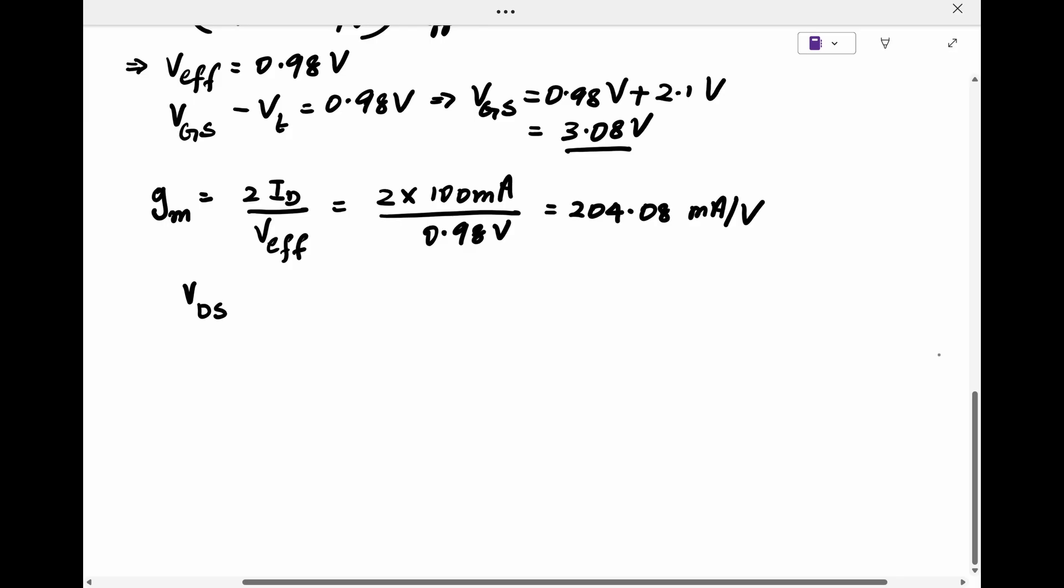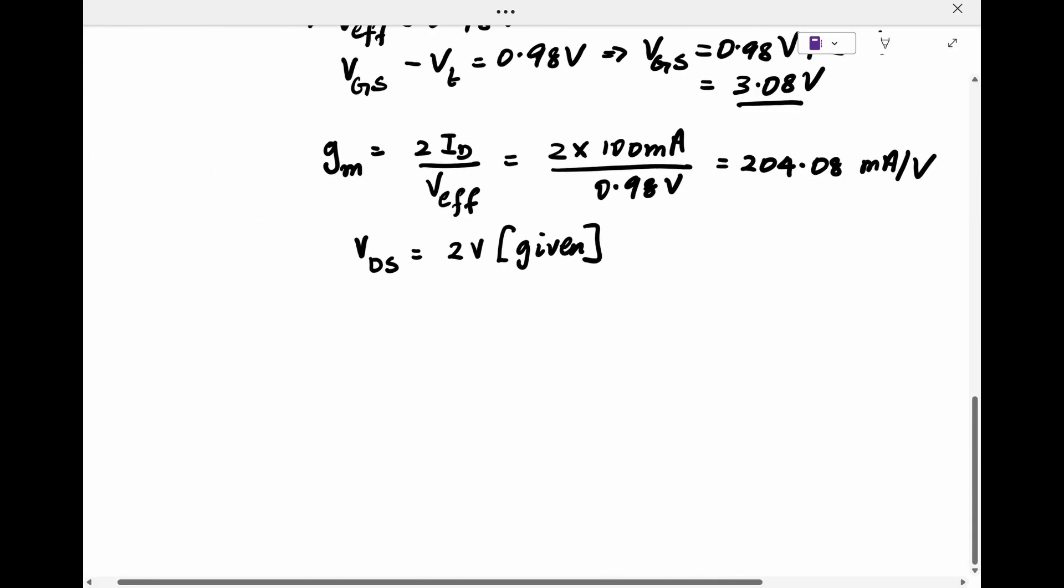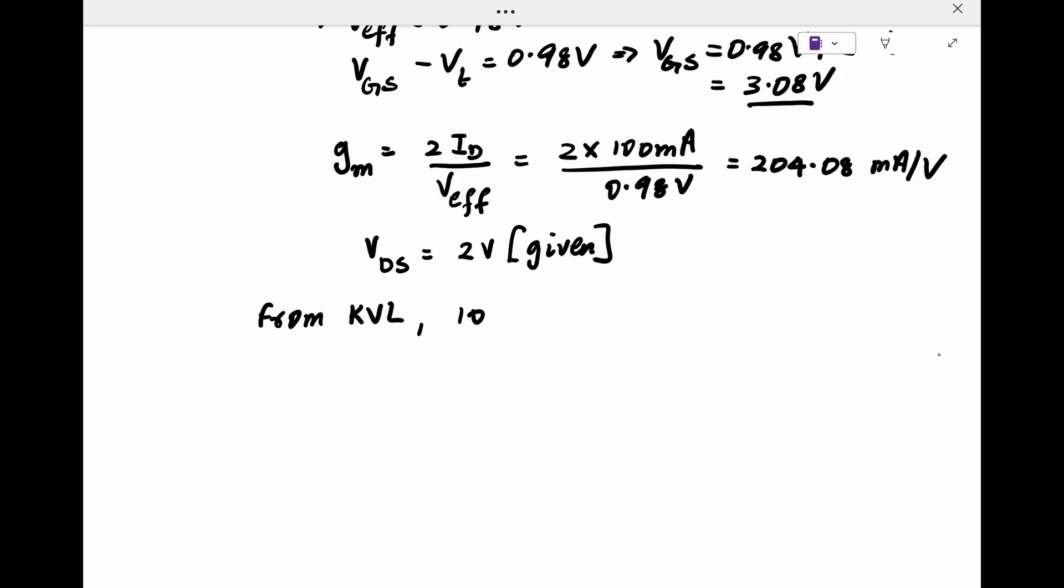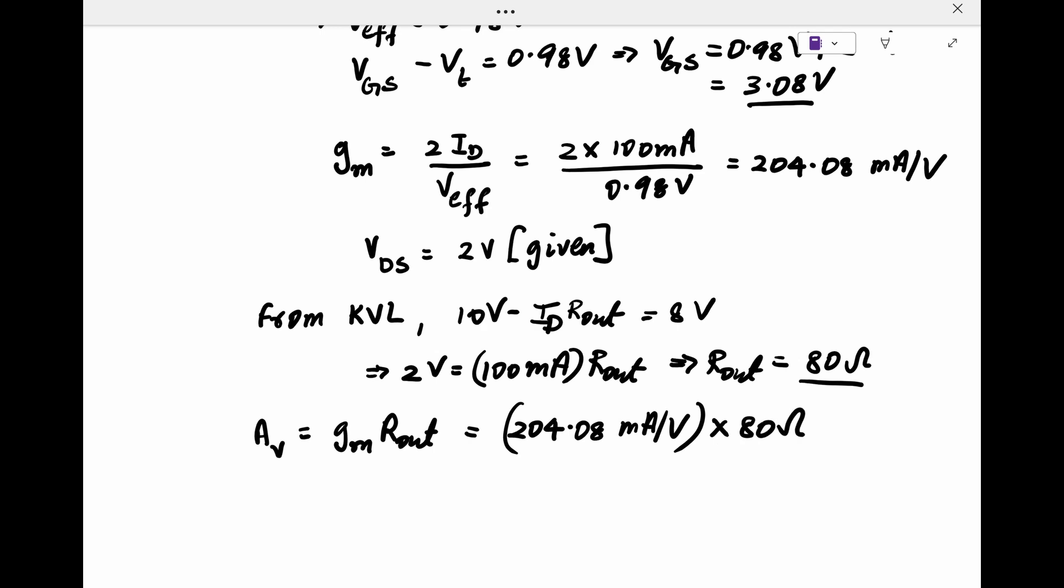If we apply KVL from the power supply to ground, we get the drop across Rout as 8 volts. Hence, for the design value of drain current, Rout comes out to be 80 ohms. Calculating the voltage gain, we get GM times Rout as 16.32 volts per volt.